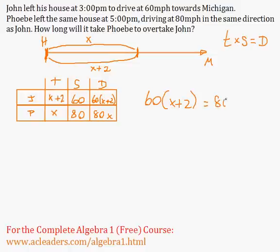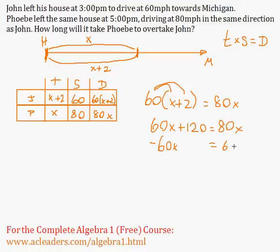So here we can distribute this. 60 times x, 60x. 60 times 2, 120. Is equal to 80x. Now we can subtract 60 from both sides of the equation. These guys go away. 120 is equal to 20x, because 80x minus 60x is 20x.